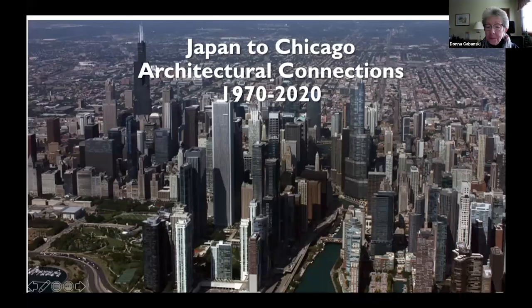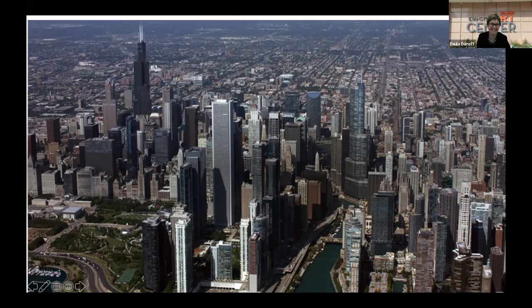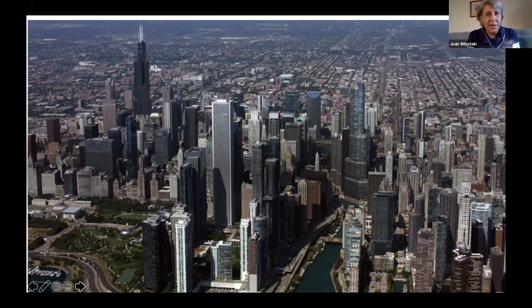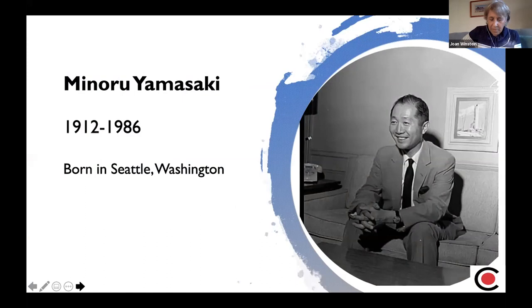My presentation picks up a number of years after Donna ends. We're going to talk about the Japanese architects who have worked in Chicago over the last 50 years and changed our skyline. The first architect I'm going to talk about is Minoru Yamasaki. There are about four or five architects and artists who have really affected our skyline in the last 50 years, and he was really one of the first.